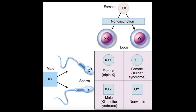Assuming the sperm cells are normal, let's do a Punnett square. If we have a secondary oocyte with two X chromosomes and fertilize it with a sperm cell carrying an X chromosome, we combine the X from the sperm with the two X's from the oocyte and end up with three X chromosomes. That's a trisomy of the X chromosome, and we term that Triple X syndrome.